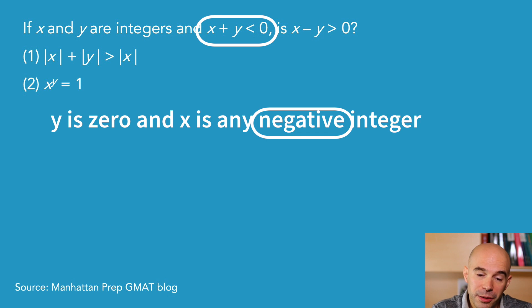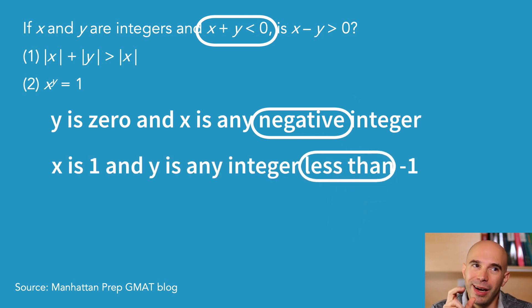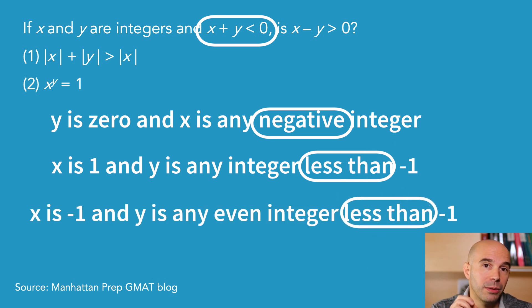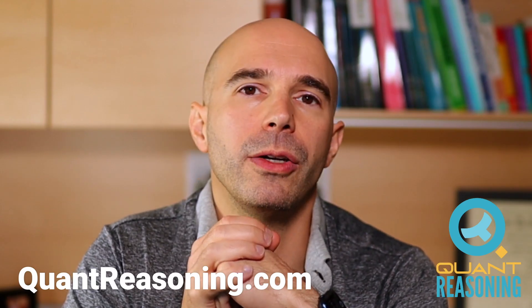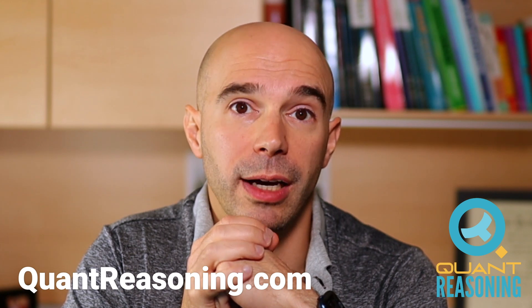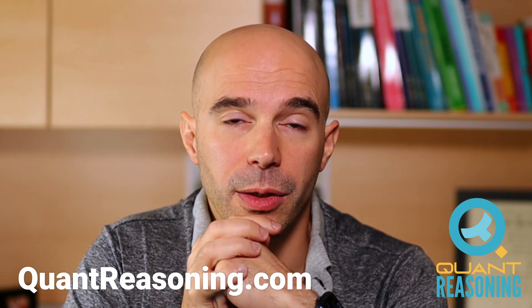If Y is zero, X could be anything. If Y is not zero, then X would have to be either one or negative one. And if it's negative one, well then Y has to be even. Y has to be an even number if X is negative one.